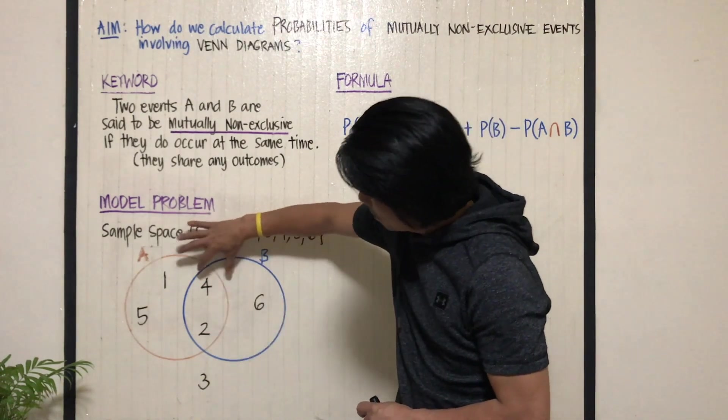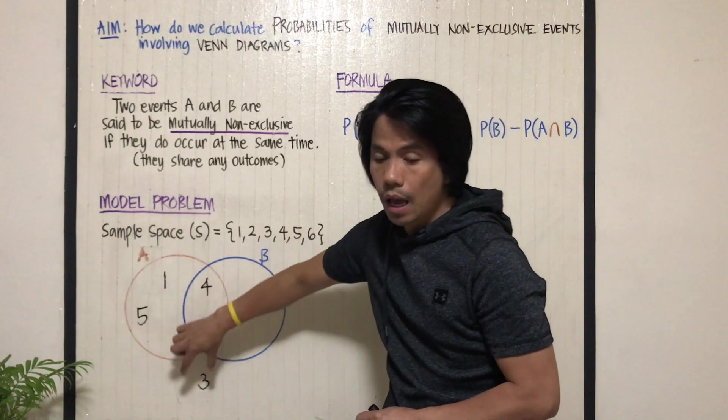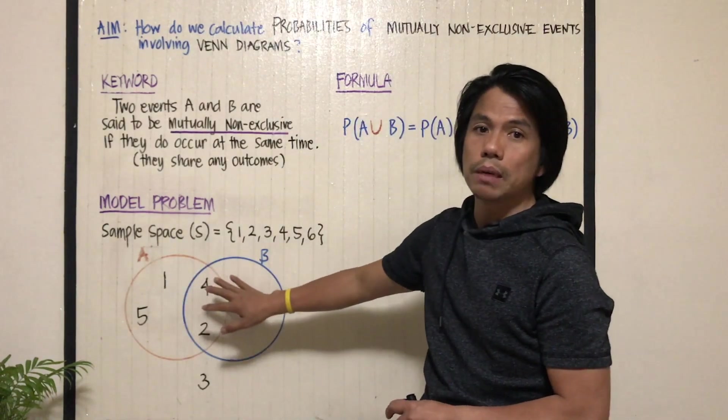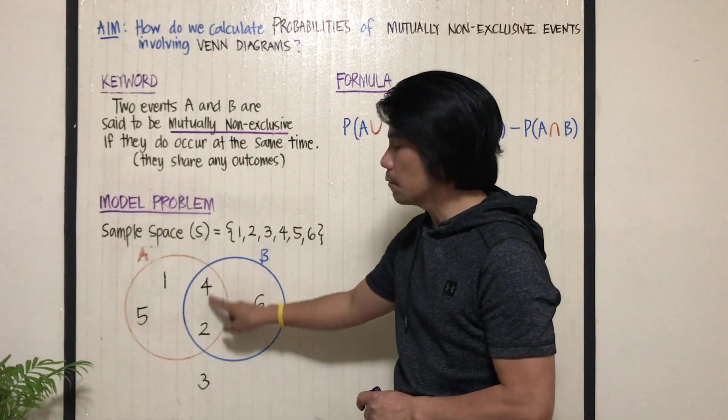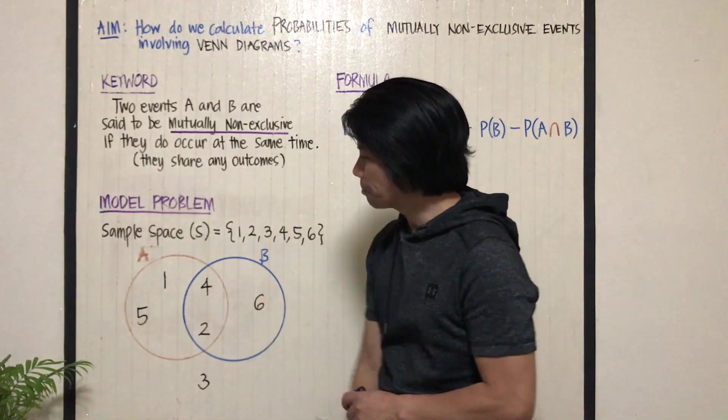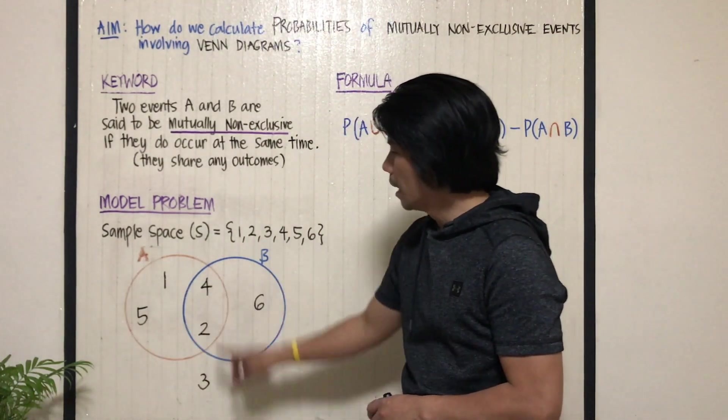If you notice, they share the same elements or outcomes or numbers, which are 4 and 2. By the way, this is not 42, this is not 51, it's 5, 1, 4, and 2.